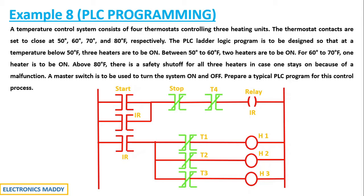If you carefully observe, I will be using a normally closed contact for T1, T2, T3, and T4. These are basically our thermostats — the sensors that are used. We have three heating units H1, H2, H3 connected to respective thermostats so that you can shut them off when they're not needed. I'm using a normally closed contact because if they're energized, they act as an open circuit and shut down the process for the respective heaters.